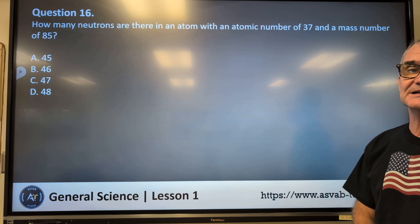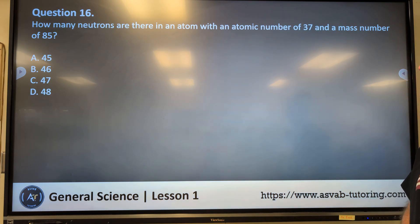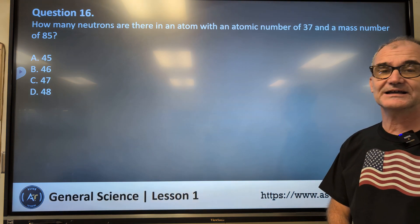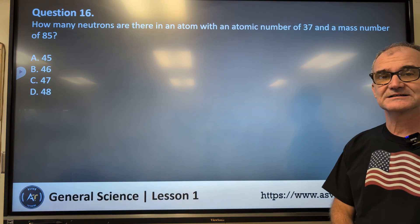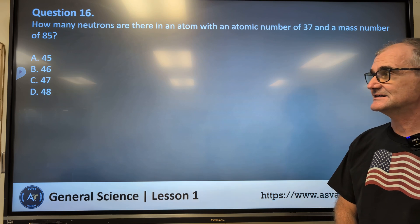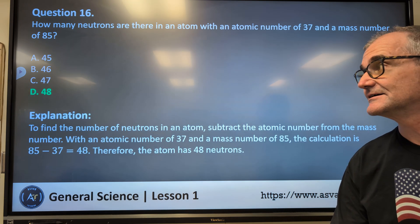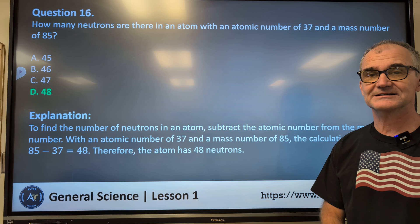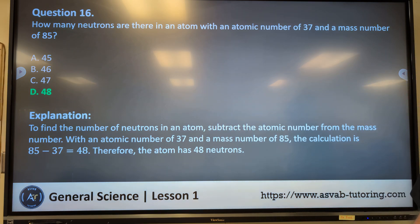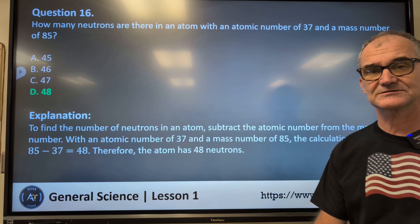Question 16. How many neutrons are there in an atom with an atomic number of 37 and a mass number of 85? A, 45. B, 46. C, 47. D, 48. Pause the video. Unpause. And the correct answer is D, 48. Find the number of neutrons in an atom. Subtract the atomic number from the mass number. So 37 and a mass number of 85. And the calculation is that 85 minus 37 to give you 48. So the correct answer is 48.